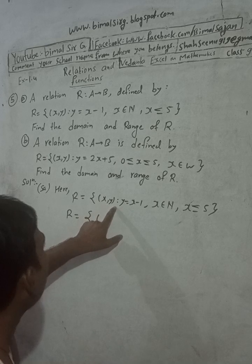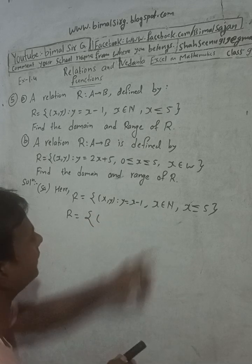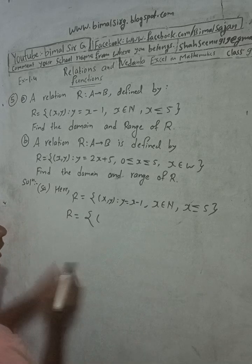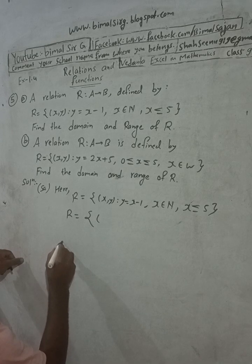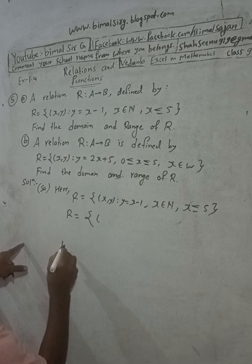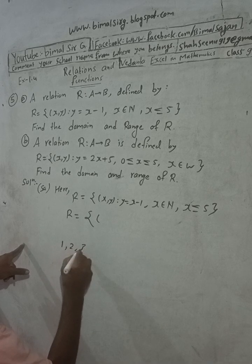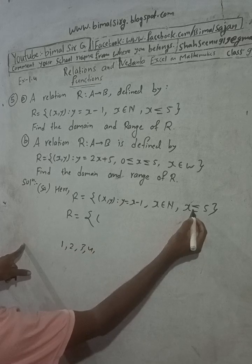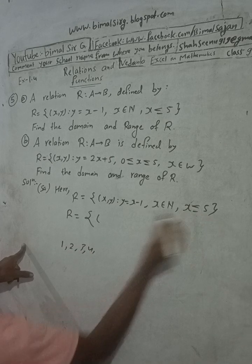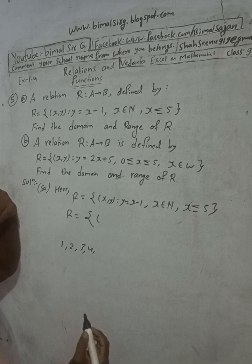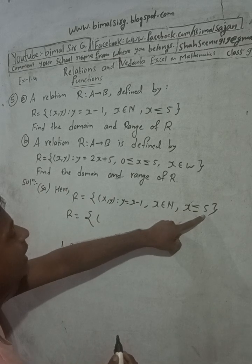R = {(x, y) such that y = x minus 1}, x is a natural number. The natural numbers we start with are 1, 2, 3, 4, and x is less than or equal to 5, so x goes up to 5.